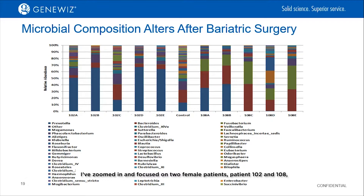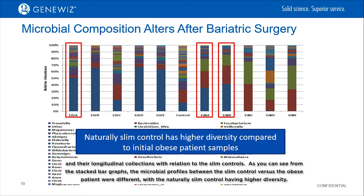I've zoomed in and focused on two female patients, patient 102 and 108, and their longitudinal collections in relation to the slim controls. As you can see from the stacked bar graphs, the microbial profiles between the slim control versus the obese patients were different, with the naturally slim control having higher diversity.